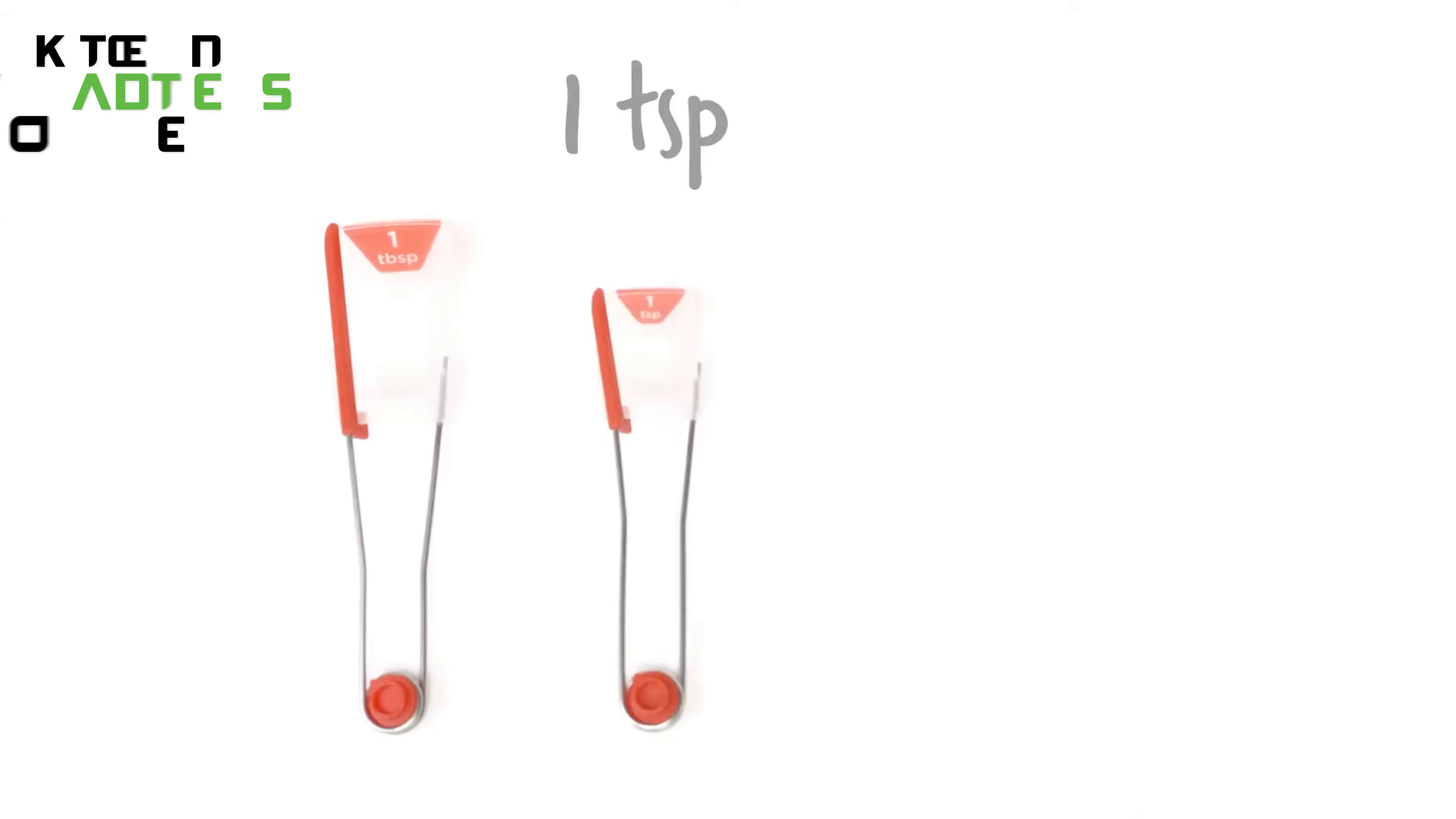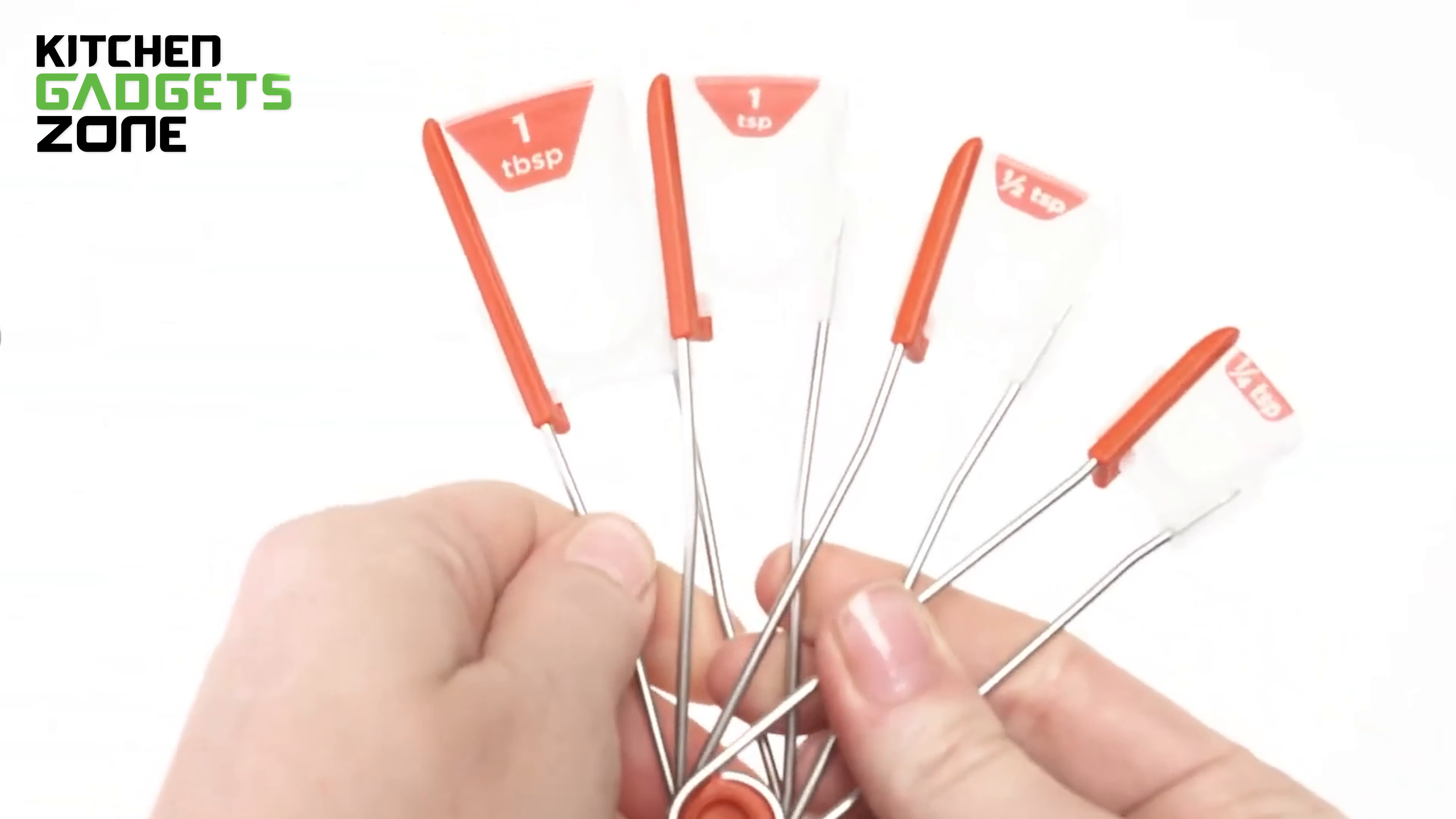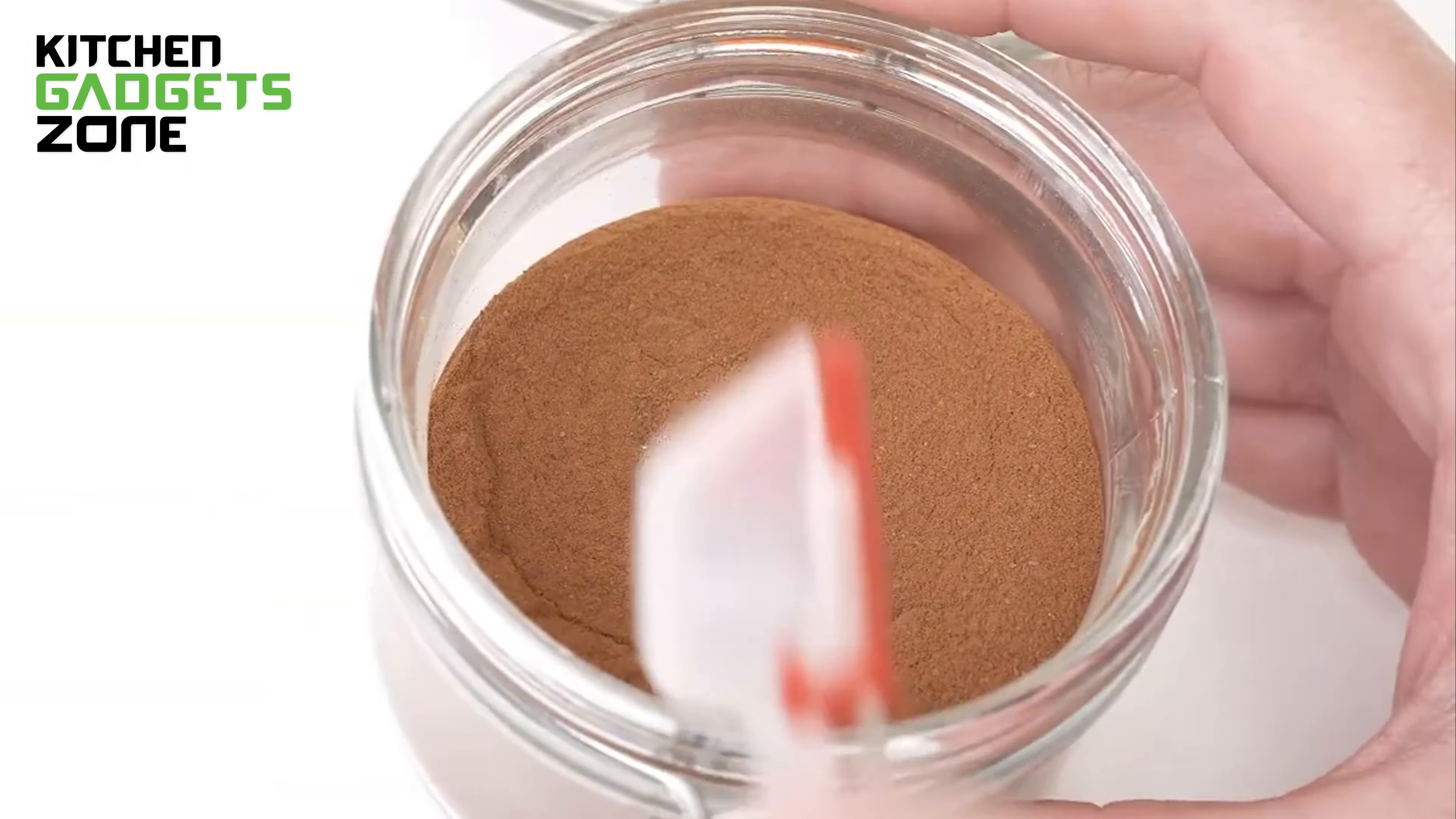Simply squeeze the handle to swipe away any additional content for a perfectly level spoonful. The set covers all the standard measuring quantities from one-quarter teaspoon to one tablespoon, with the measurements engraved right onto the spoon so they'll never wash away or fade.